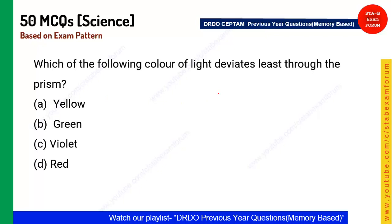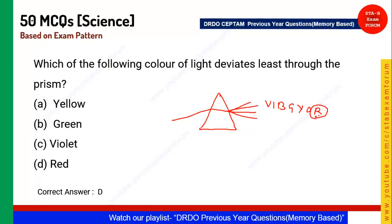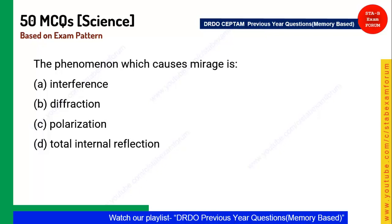Next question: Which color of light deviates least through a prism? When sunlight passes through a prism it disperses into seven colors — VIBGYOR: violet, indigo, blue, green, yellow, orange, and red. The least deviation depends on the lowest frequency, and red has the lowest frequency. So the correct answer is red — option D.